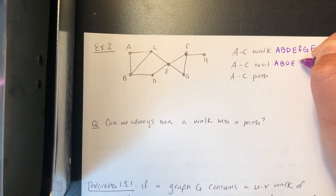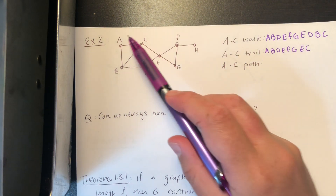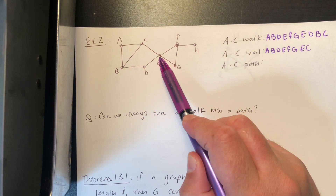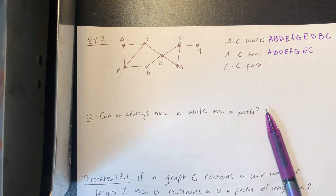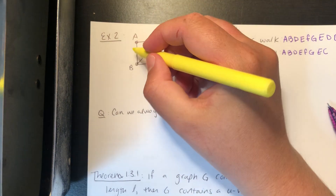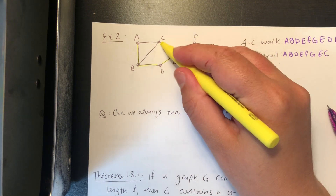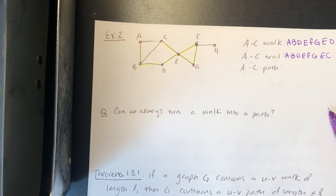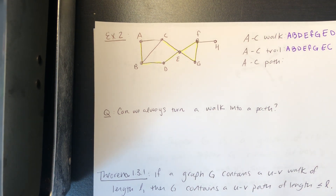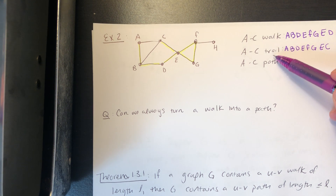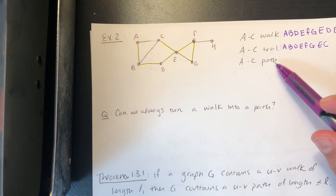For an a-to-c trail: a, b, d, e, f, g, e, c. Going from a to b to d to e to f to g to e to c, we didn't repeat any edges. We did repeat vertex e — we passed through it twice — but since no edges were repeated, this is an a-to-c trail. However, it's not a path, because a path requires no repeated vertices.